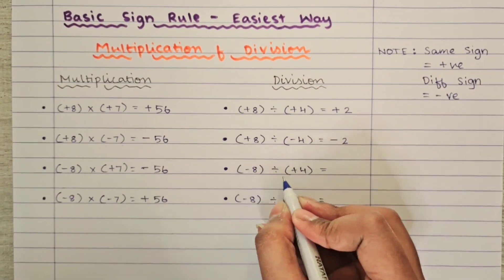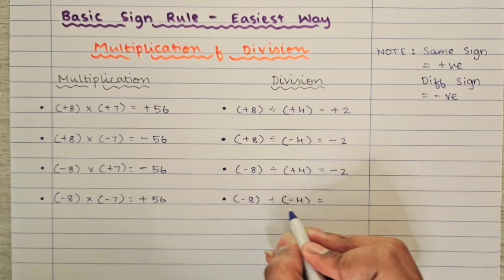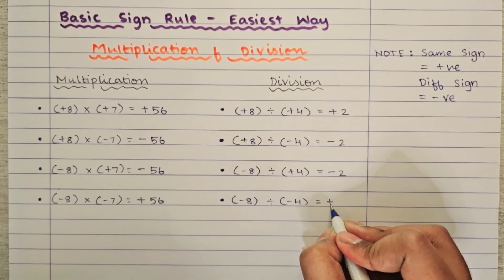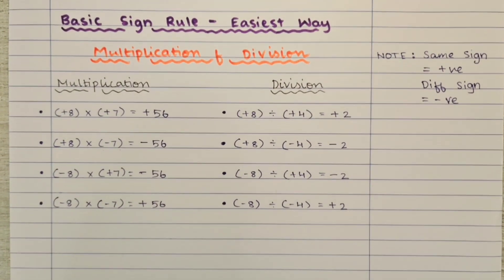Next, minus 8 divided by plus 4. Different sign, so we have to have negative minus 2. Next, minus 8 divided by minus 4. Same sign, so we will have a positive number, plus 2.